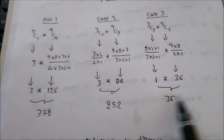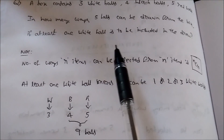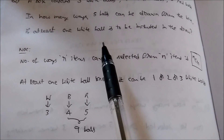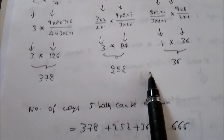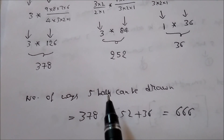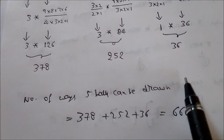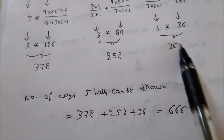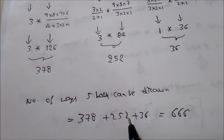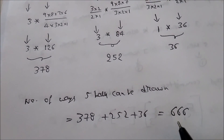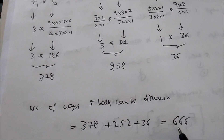So 378, 252, and 36 are the number of ways to draw at least one white bar in a draw of five bars. The total number of ways is 378 + 252 + 36 = 666. Thank you for watching this video, please subscribe to my channel.